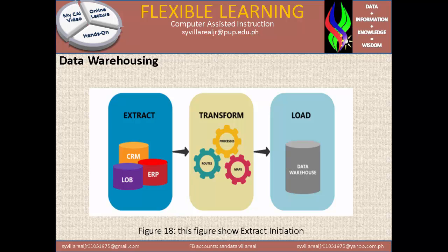So on the left part we have extract: CRM, ERP, LOP. It goes directly to transform, which is process, route, and map. Then it will go to load. So we have extract, transform, load — and this figure 18 shows extract initiation. You will already know that this is what you call the ETL itself, which connects the data warehouse from the database itself.